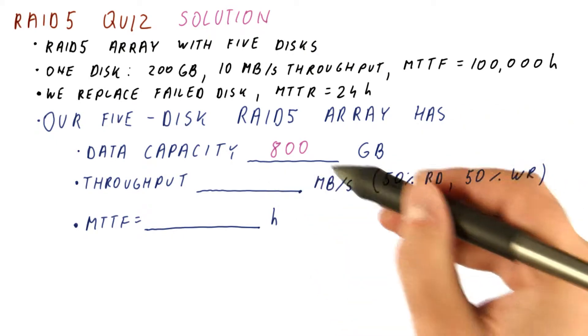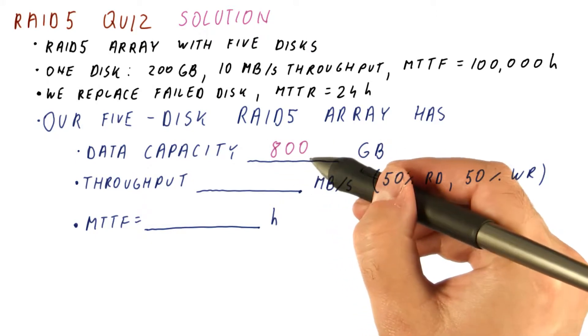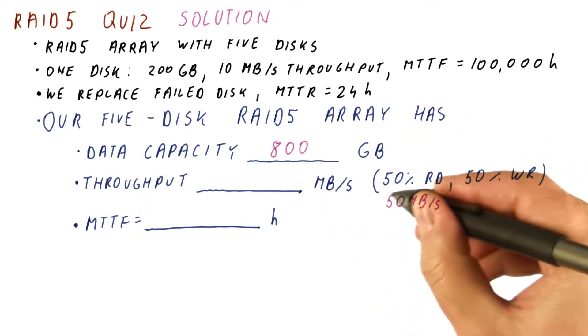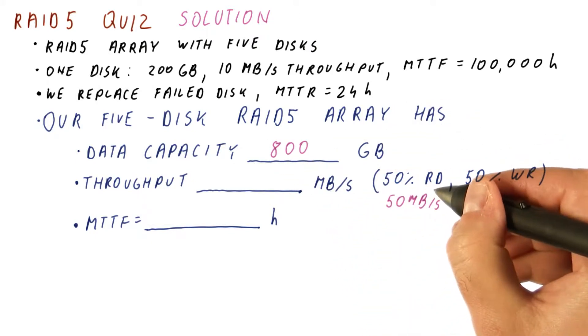For reads, all of the disks now have equal amounts of data, so we can use all five of them when we want to read.